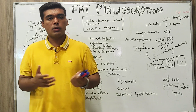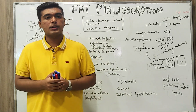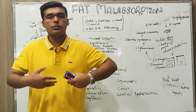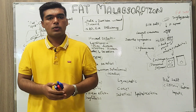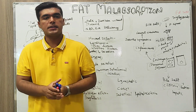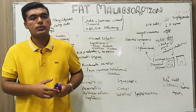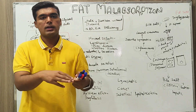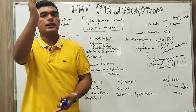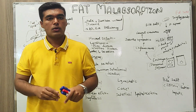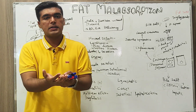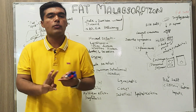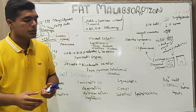The process starts from the mouth where we have lingual lipase and the phenomenon of mastication. When we further descend down the GI tract, in the stomach we have gastric lipase, which basically decreases pH and increases acidity. At this stage, fat is still in the form of triglyceride as it enters the duodenum.